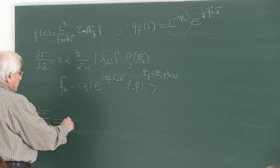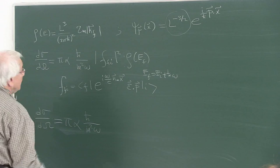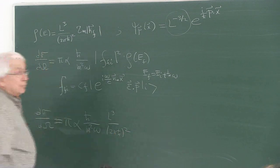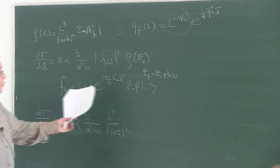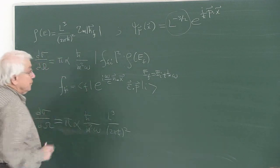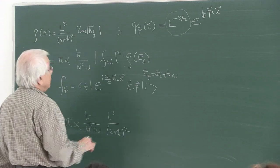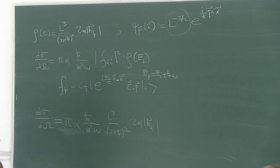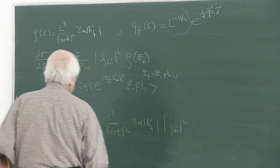Substituting the density of states: pi alpha times h-bar over m squared omega times rho, where rho is L cubed. Notice that L appears here, which might be a source of worry, but you'll see it cancels nicely if we use the same prescription in the computation with the final wave function. We have 2m, kf; pf and kf are related — one is the momentum, the other is the wave vector — times the matrix element f-i squared.